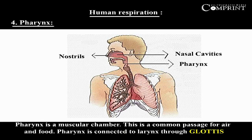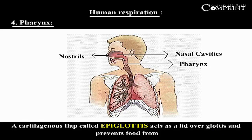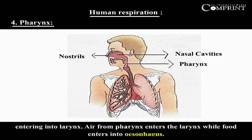The pharynx is connected to the larynx through the glottis, which is a slit-like opening. A cartilaginous flap called the epiglottis acts as a lid over the glottis and prevents food from entering the larynx. Air from the pharynx enters the larynx, while food enters the esophagus.